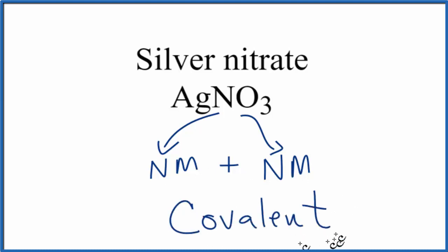So the bond between the nitrogen and the oxygen atoms, those bonds, they're going to be covalent. But overall, the bond between the silver and the nitrate ion, that's ionic. So we call the compound an ionic compound.